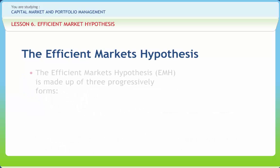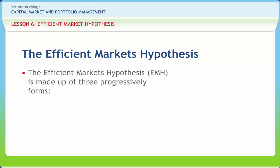The Efficient Markets Hypothesis is made up of three progressive forms. First is weak form efficiency, which implies that technical analysis techniques will not be able to consistently produce excess returns, though some forms of fundamental analysis may still provide excess returns.